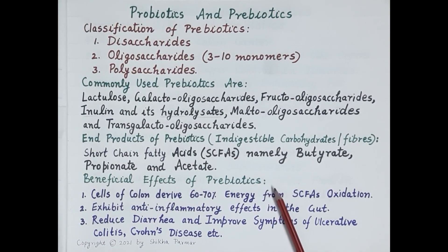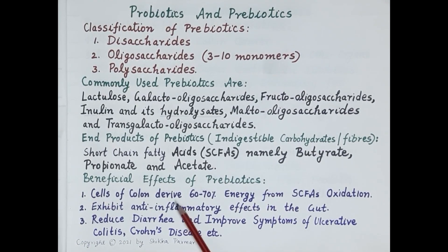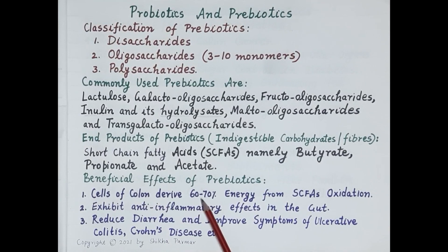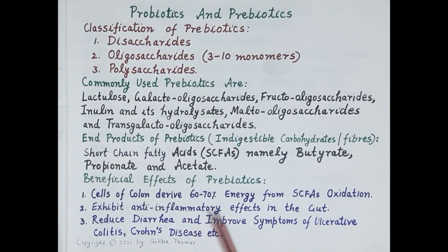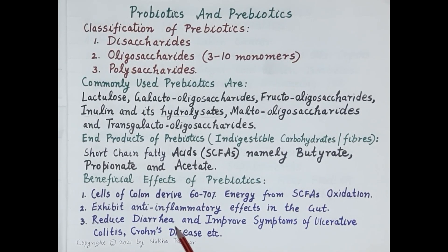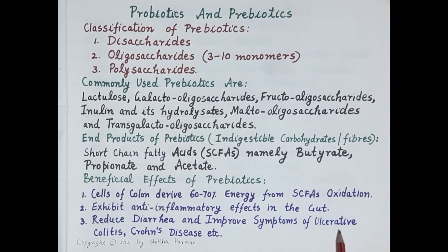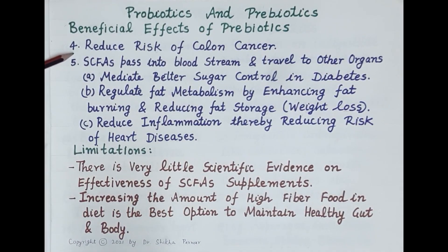The beneficial effects of prebiotics are as follows. Cells of the colon derive 60 to 70 percent of their energy from short chain fatty acid oxidation. These short chain fatty acids exhibit an anti-inflammatory effect in the gut, preventing inflammation. Since they regulate bowel movements, they reduce the incidence of diarrhea, and since they are anti-inflammatory, they improve symptoms of inflammatory diseases like ulcerative colitis and Crohn's disease. They also strengthen the gastrointestinal tract and immunity of the gut, thereby reducing the risk of colon cancer.